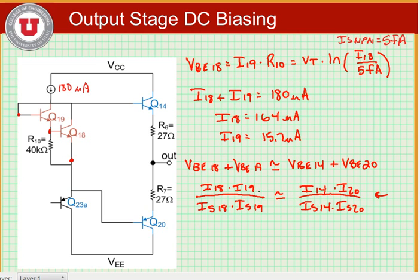Now we note that the saturation currents for 14 and 20 are slightly different than the saturation currents for the rest of the transistors because these are output stage transistors and so they're engineered slightly differently. We'd find that IS14 is approximately equal to 4.5 times the IS that we've been using of 5 femtoamps. And we know IS20 is approximately equal to 10 femtoamps.